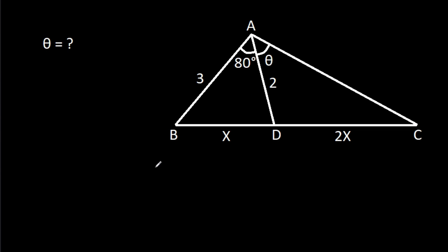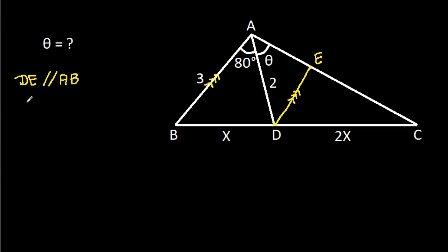So, from point D, if we make a line DE such that DE is parallel to AB — this is our construction.